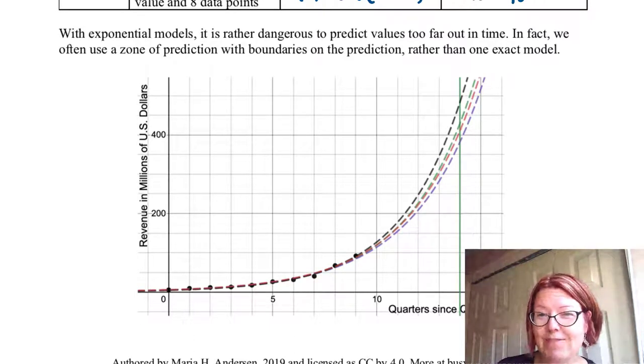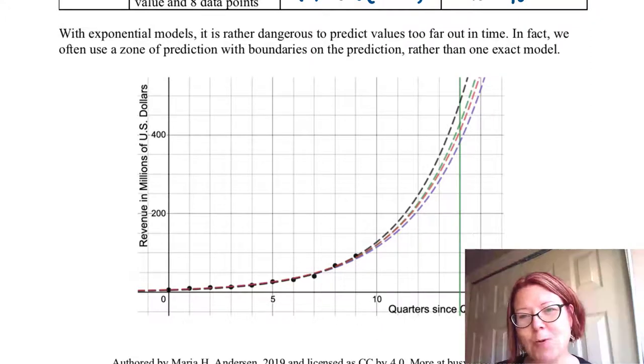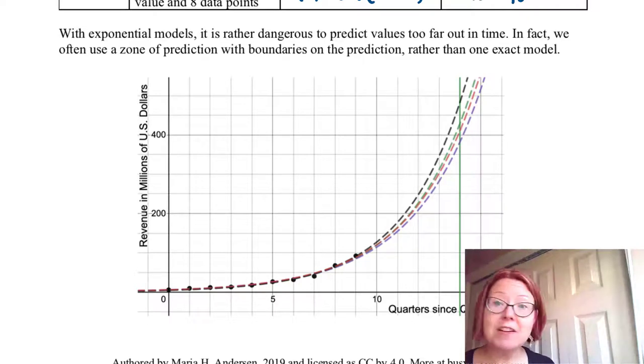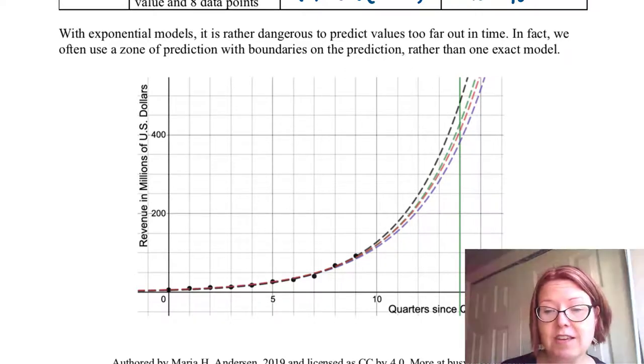This is why it's dangerous to predict values too far out in time for exponential models. There is so much variation simply from putting in one extra data point, removing a data point, or forcing the initial value. In fact we often use a zone of prediction with boundaries on the prediction rather than one exact model. And so sometimes in scientific predictions, for example like climate change models, you see this zone of prediction. It's not because the scientists don't know what the current data is. It's because the projections, the exponential model projections, have so much variability when you go a little ways out. Let me show you what this looks like in Desmos.